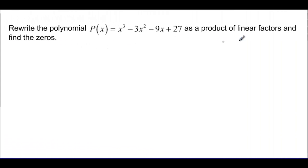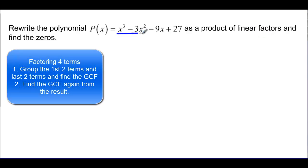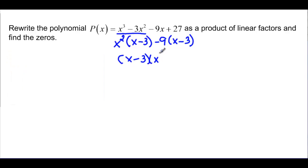Now they want us to write this one as a product of linear factors and find the zeros. We could look and see if we could just factor it just the way it is. We've got four terms here. So let's see if we take a common factor of x squared out, we'd be left with x minus 3. And we take a common factor here out as negative 9 and we'd have x minus 3. So that leaves us with the common factor of x minus 3 and x squared minus 9 as my other factor. And this is linear but this one is not so we have to go one step further. And this would be x minus 3 and x plus 3.